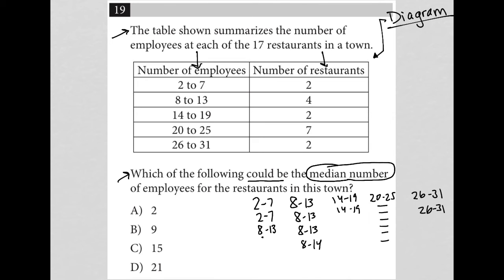So if these were single numbers, I would just start canceling them out — cancel out the smallest value with the largest value. In essence, I don't really care what the value was at either end, because they cross each other out. Then I have the second largest value crossing out the second smallest value, and I start crossing those out too.